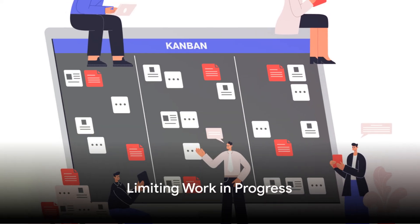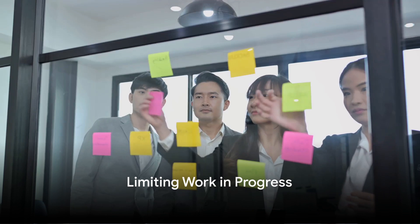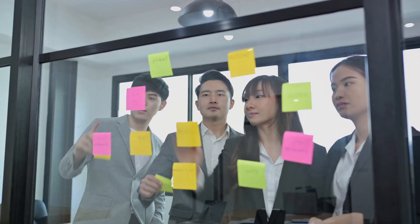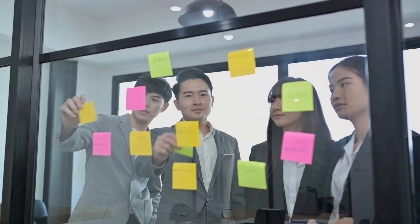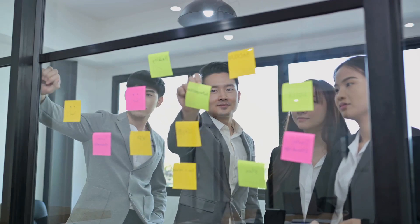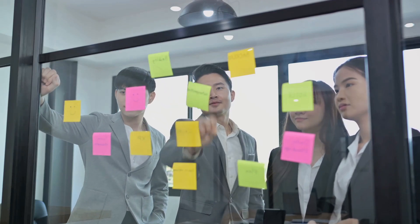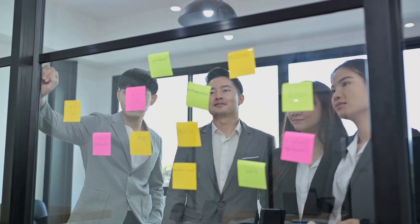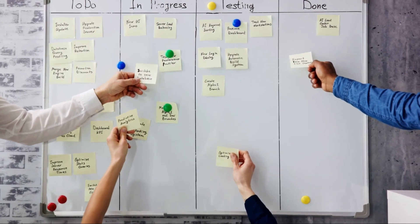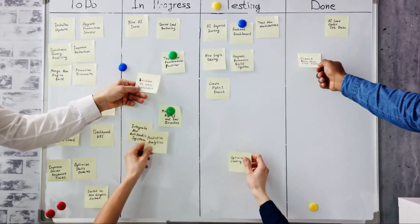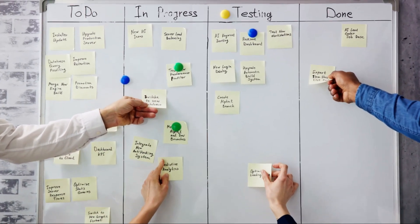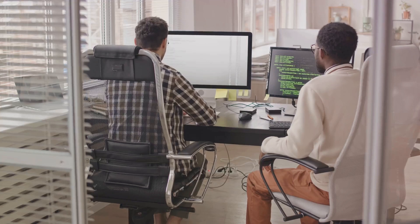Next up we have a game changer: limiting work in progress. Picture a software development team swamped with tasks and losing sight of the big picture. They're juggling too many balls and, inevitably, some are dropping. The quality starts to slip, deadlines are missed, and stress levels rise.